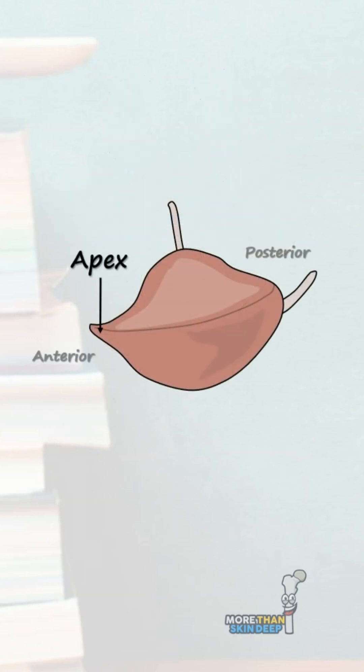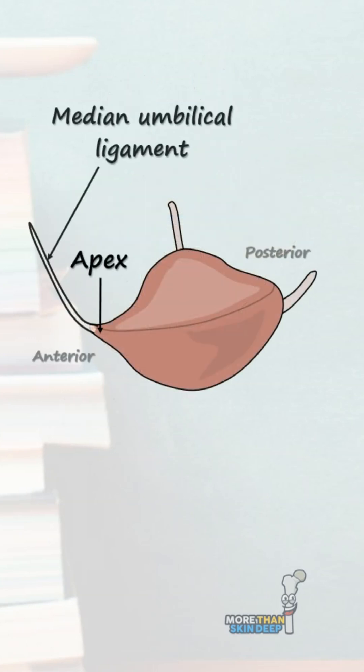Anteriorly, you have the apex of the bladder, which attaches to the median umbilical ligament, which goes on to attach to the internal aspect of your belly button, or umbilicus.